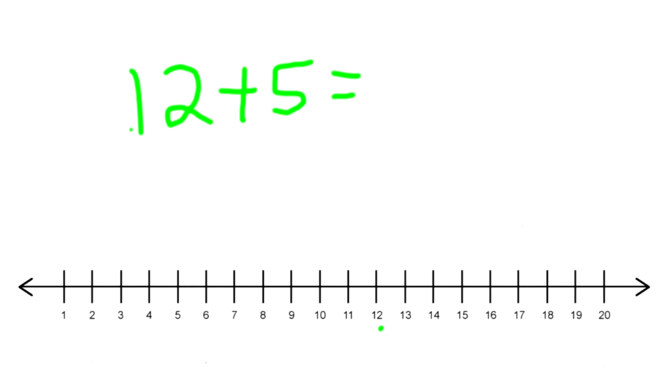And how many times do we jump? Right, we're going to jump five times. So jump with me, you can count with me: 1, 2, 3, 4, 5. So 12 plus 5 equals 17.